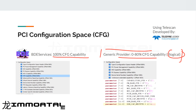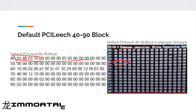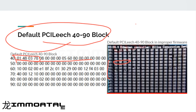Here we have an example from BDE Services. Look at that — they have everything down. When comparing to your config space, it should look exactly like a real device; there should be no difference. We also have a default PCLH 4090 block and an example of improper firmware. Looking at the 40 to 90 range, you can match them up: 0, 1, 48, 0, 7 — exactly the same. There may be some slight differences, but overall this is literally just the default PCLH, which means your firmware was not done correctly.